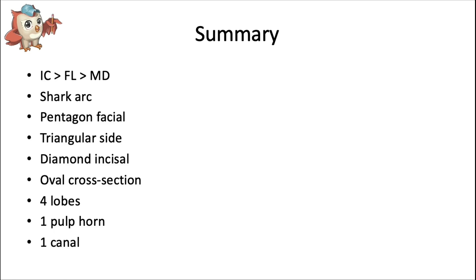A summary of the mandibular canine: the incisocervical dimension is greater than faciolingual, which is greater than mesiodistal. It has the characteristic shark arc, is a pentagon from the facial view, triangular from the side view, diamond from the incisal view, but oval at the cross-section. It primarily consists of four lobes, one pulp horn, and one canal.